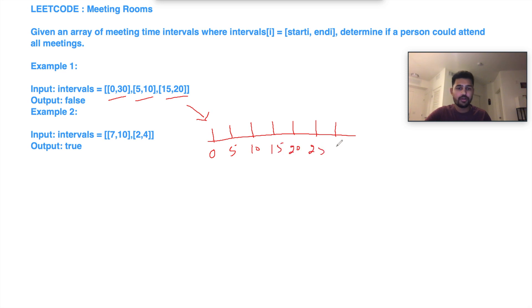If you mark these meetings, the first meeting start time is 0 and end time is 30. The first meeting starts from here to here, so basically the room is occupied from start time 0 and it goes for 30 minutes. The second meeting starts from 5 and goes till 10.